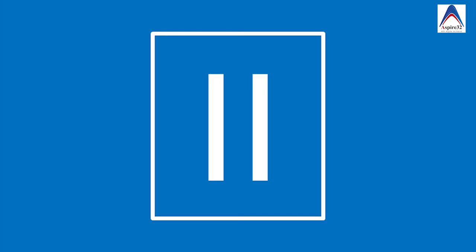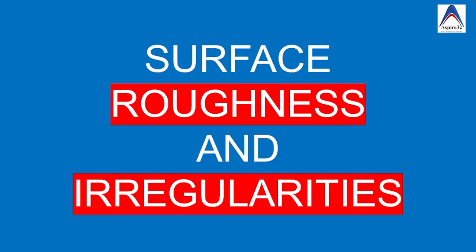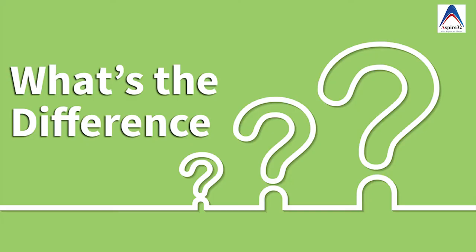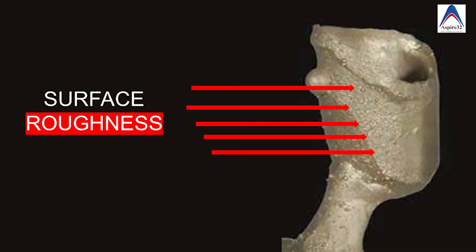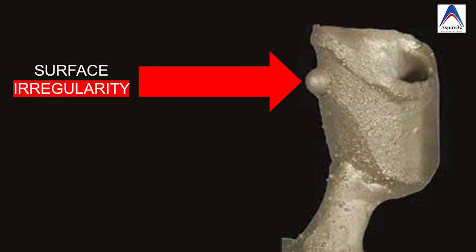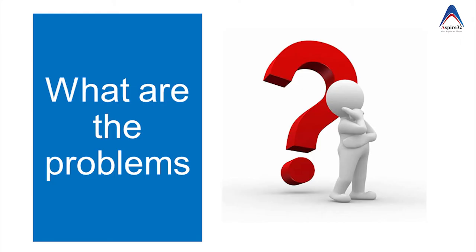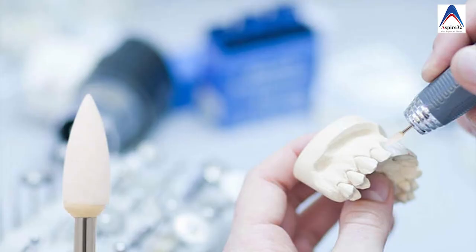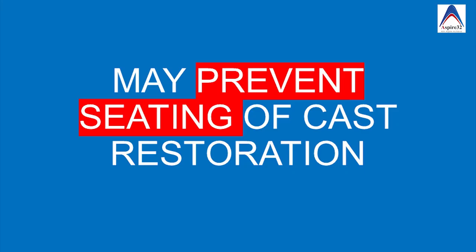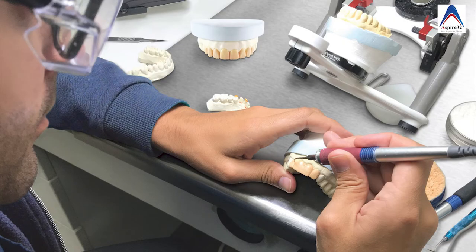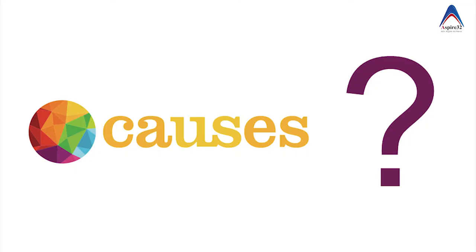Now let's talk about the second major category: surface roughness and irregularities. Surface roughness is a generalized defect, whereas a surface irregularity is an isolated defect. Since it is only a surface phenomenon, this is mostly related to finishing and polishing — having more surface roughness and irregularity means you will have to finish and polish the cast restoration a bit more.